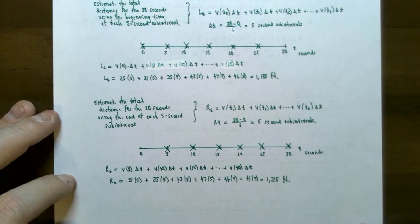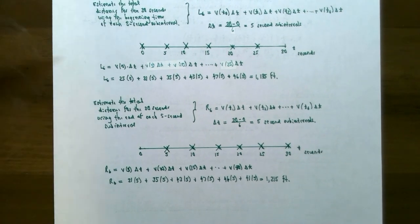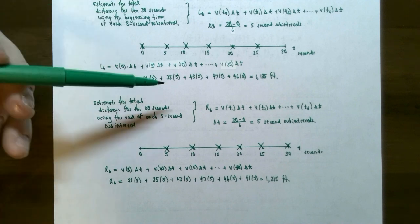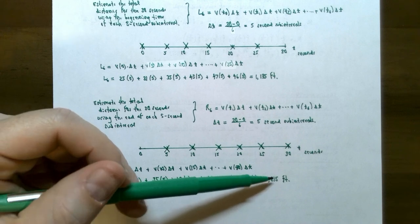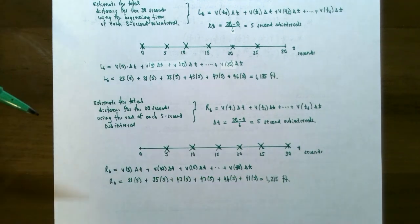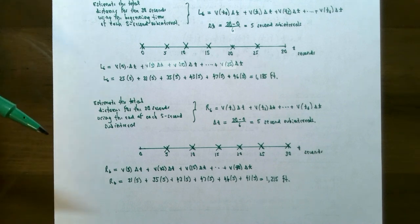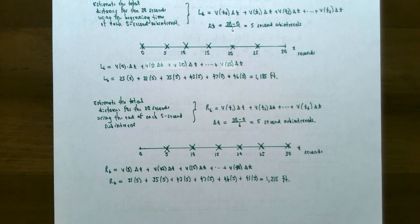This is an approximation. The actual total distance is somewhere between 1,135 feet and 1,215 feet. If you increase the number of subintervals, you will approach the actual total distance for the object — in this case, a car. This finishes our discussion on the area problem and how it relates to distance. If you have any questions, please let me know, and I'll see you at the next video when we talk about the definite integral.